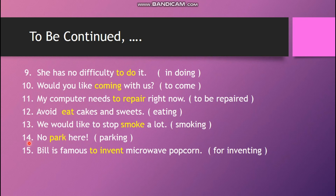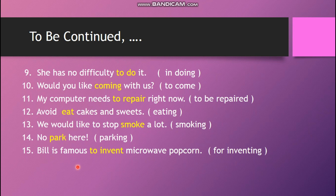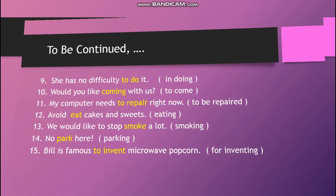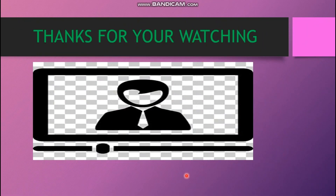Number fourteen: signs always use the gerund — 'no parking,' 'no smoking,' 'no talking,' etc. Finally, 'she is famous to invent' is incorrect. The adjective 'famous' should be followed by 'for,' so it should be 'she is famous for inventing.' Thank you for watching.